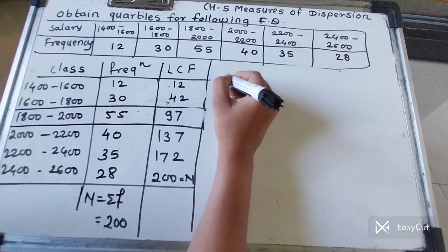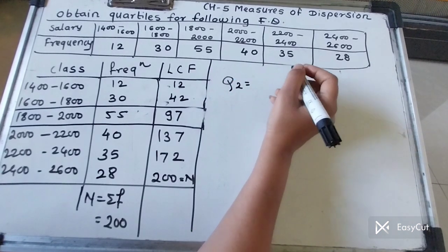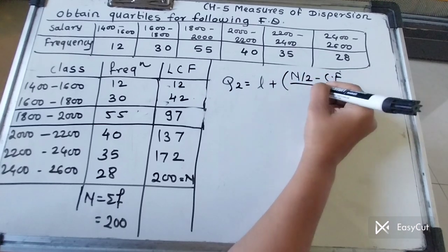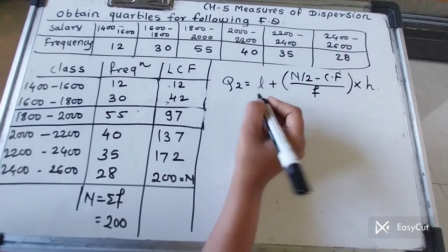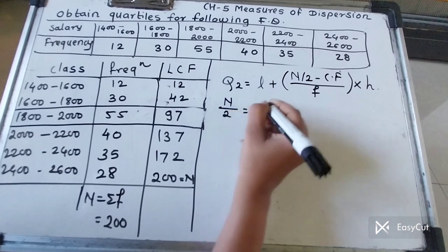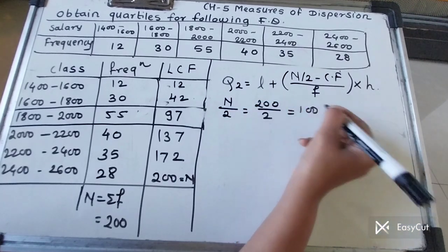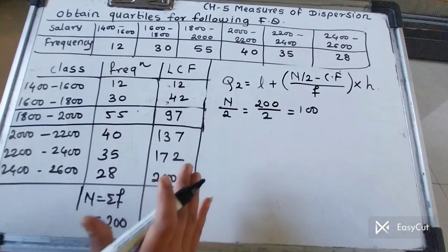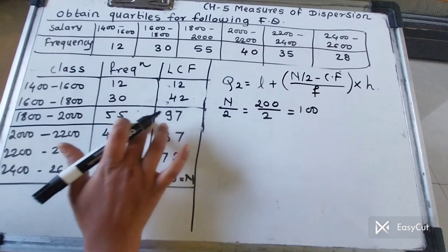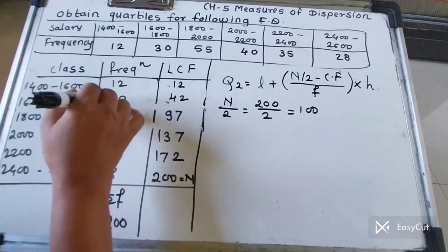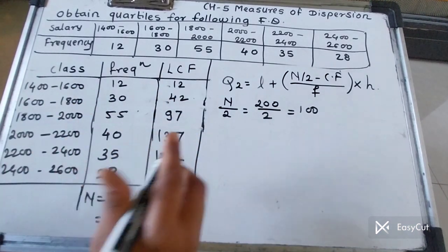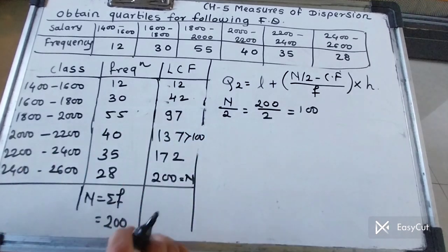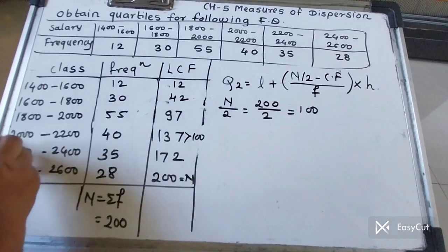Now finding Q2. Q2 is the median: L + (N/2 − cf) / f × h. First, N/2 = 200/2 = 100, so we look for the 100th observation. Checking the LCF: 97 is less than 100, and 137 exceeds 100 for the first time. So the Q2 class is 2000–2200.